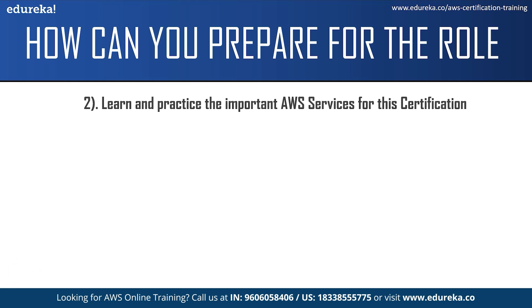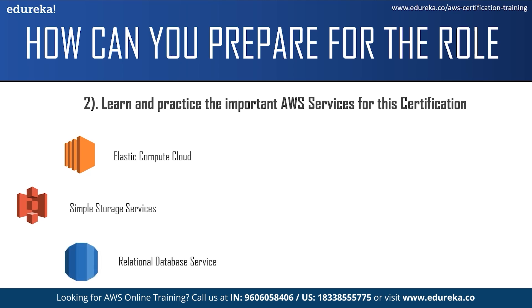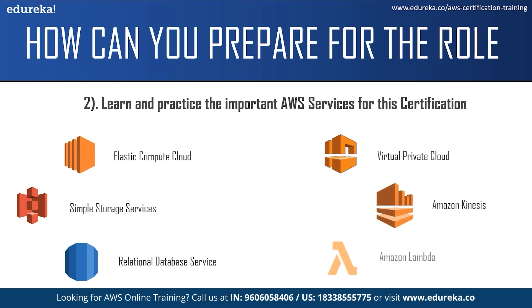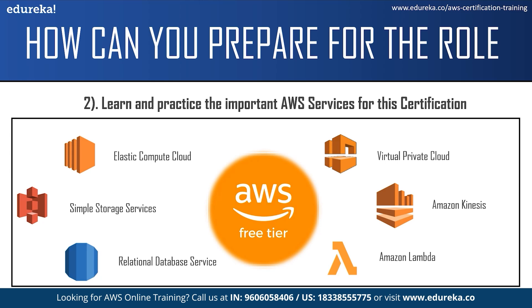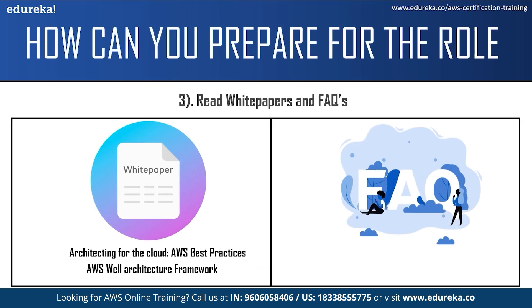Some of the important AWS services are Elastic Compute Cloud, Simple Storage Service, Relational Database Service, Virtual Private Cloud, Amazon Kinesis, and Amazon Lambda. You can practice these services using an AWS free tier account, which allows you to access over 85 AWS services for free. Moving on, refer to white papers and frequently asked questions. White papers will give you technical knowledge about various AWS concepts and services. Two of the best white papers for the certification are 'Architecting for the Cloud: AWS Best Practices' and the 'AWS Well-Architected Framework'. The FAQs will help you clear your doubts regarding the certification.